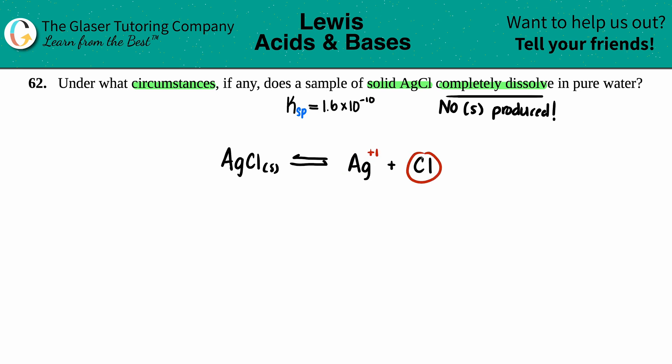Silver is always a plus one charge and the halogens - chlorine is a halogen - if it's bound with the metal which it is, will be the negative one. They're both charges so that's aqueous and aqueous. The equation is already balanced so we're good with that.